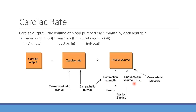End-diastolic volume — the volume left in the ventricle at the end of relaxation — plays a big role. This relates to the Frank-Starling law: as you increase the volume remaining at end-diastole, that causes stretch, and stretch signals the heart to increase contractility strength to pump more blood out, which has a positive effect on stroke volume.